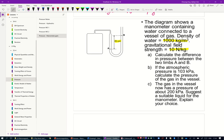Now let's come to the first problem. The diagram shows a manometer containing water connected to a vessel of gas. Density of water 1000 kg per meter cube, gravitational field strength 10 N per kg. Calculate the difference in pressure between A and B.